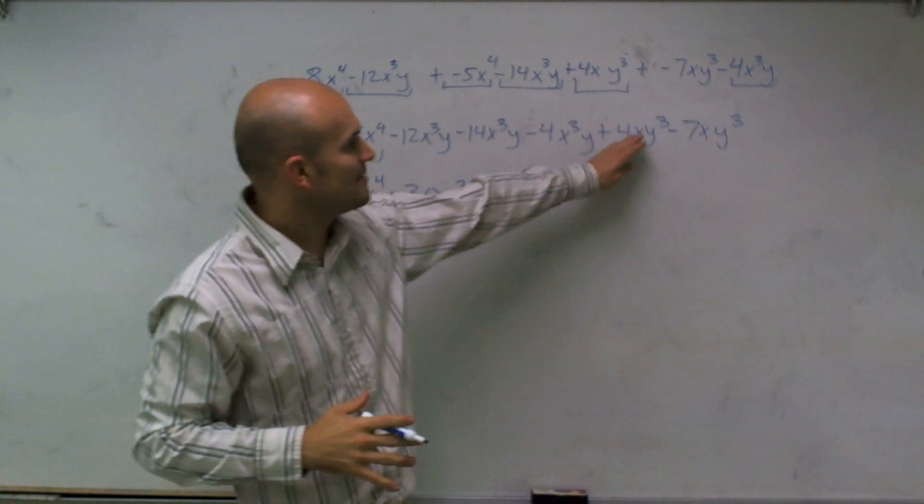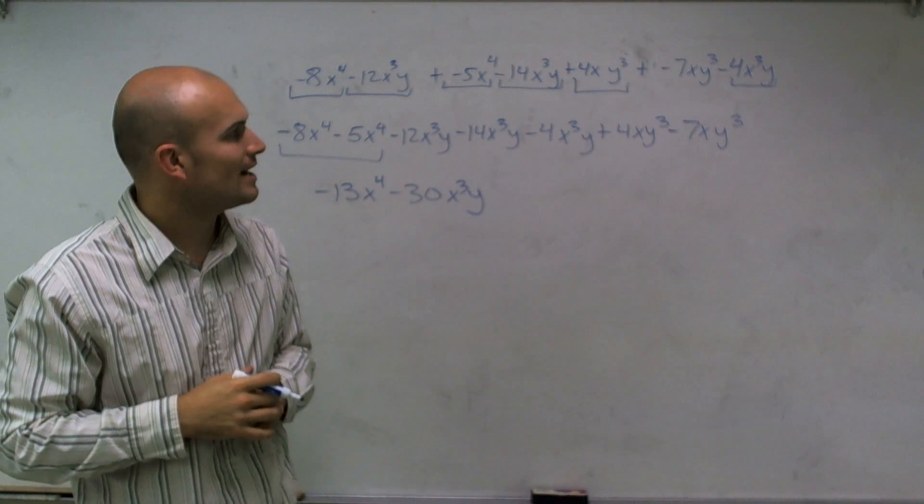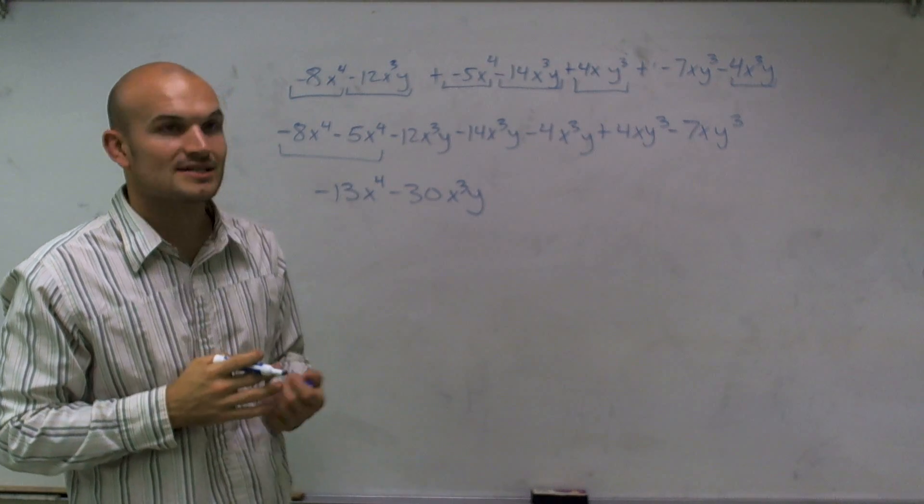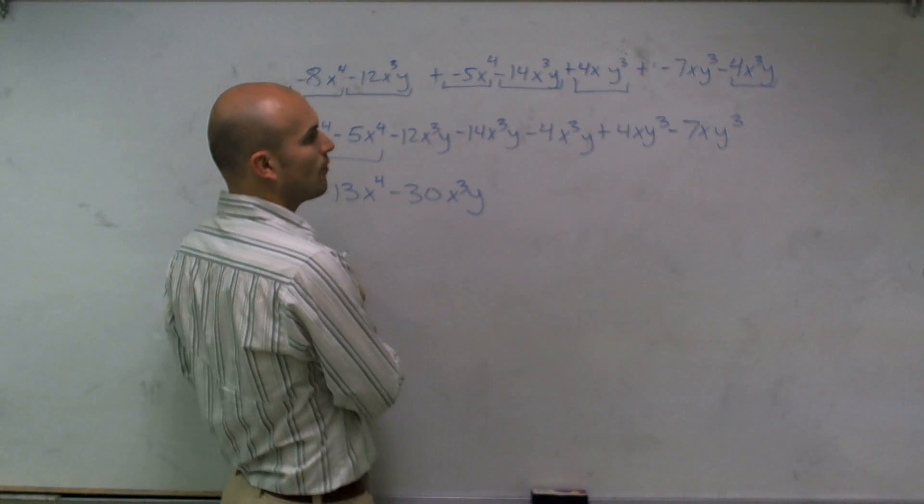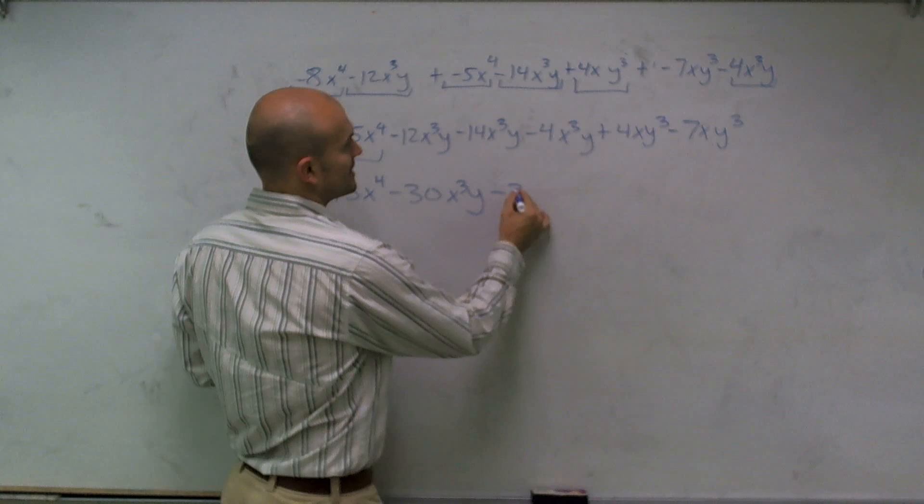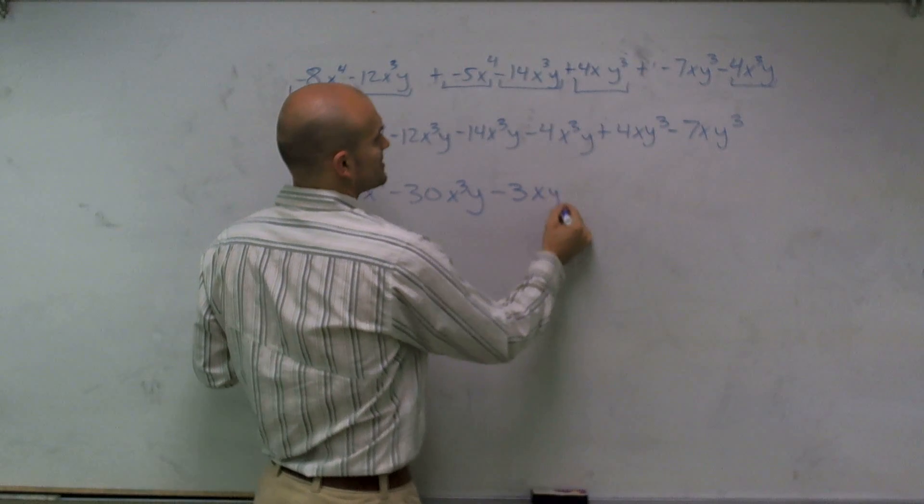And then lastly, I have my last two terms, 4xy cubed minus negative 7xy cubed. Again, since they're the same terms, I can just subtract. So I have 4 minus 7 is going to be a negative 3xy cubed.